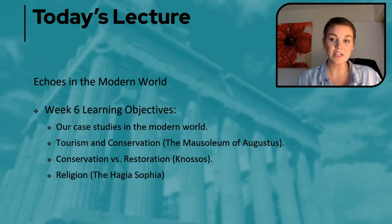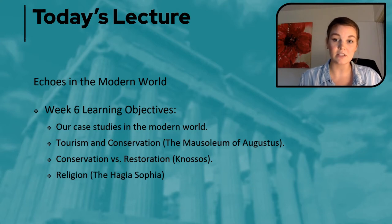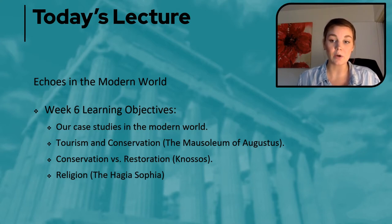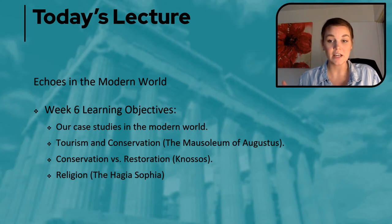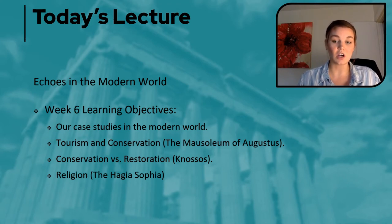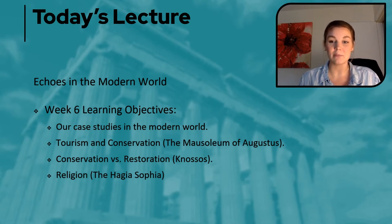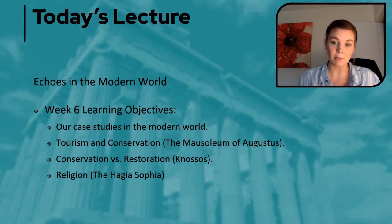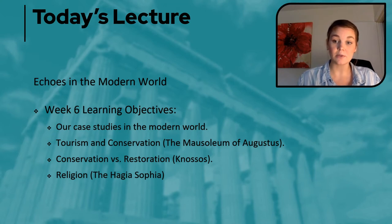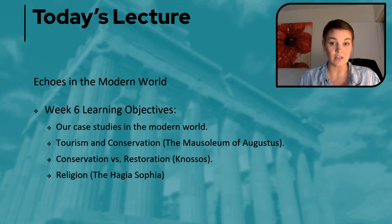This week in terms of learning objectives, I'm going to quickly go over how our case studies have impacted the modern world, and then we're going to have a discussion about tourism and conservation, because when it comes to architecture especially, these two things should be discussed in tandem. I also want to touch on conservation versus restoration, because that is quite the point of contention when it comes to buildings in the archaeological record, and we'll be looking at the site of Knossos. I also want to discuss religion, specifically with the recent conversion of the Hagia Sophia that I mentioned last week.